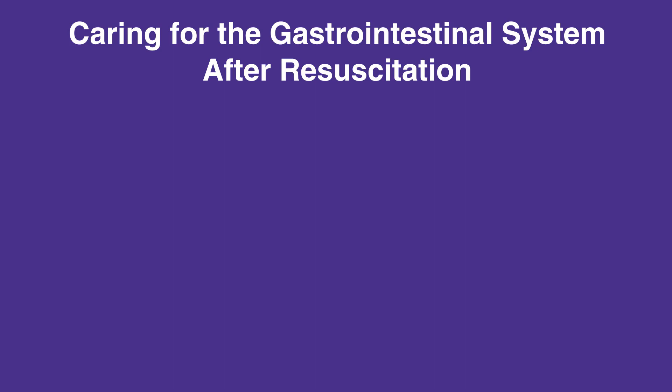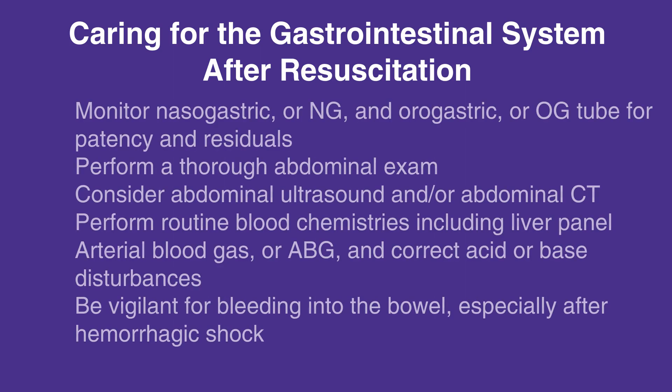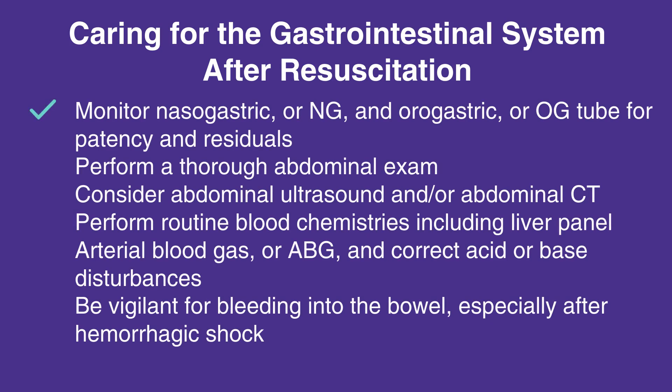When caring for the gastrointestinal system after resuscitation, follow this checklist: monitor nasogastric or NG and orogastric or OG tube for patency and residuals; perform a thorough abdominal exam — a tense abdomen may indicate bowel perforation or hemorrhage; consider abdominal ultrasound and/or abdominal CT; perform routine blood chemistries including liver panel; arterial blood gas, or ABG, and correct acid or base disturbances; be vigilant for bleeding into the bowel, especially after hemorrhagic shock.